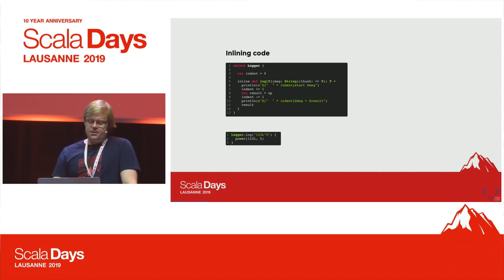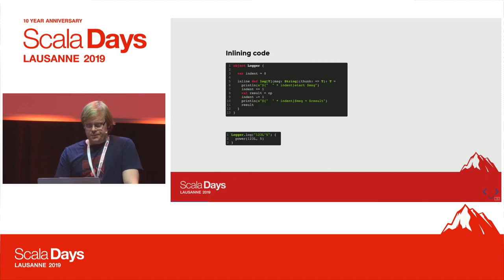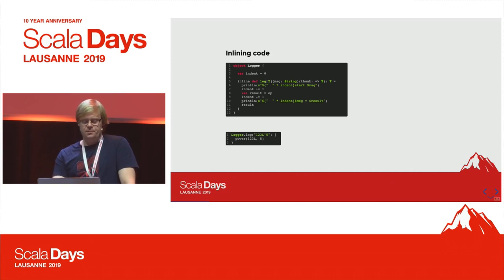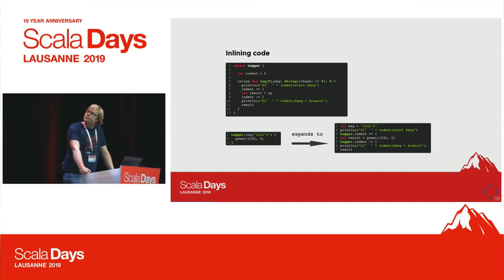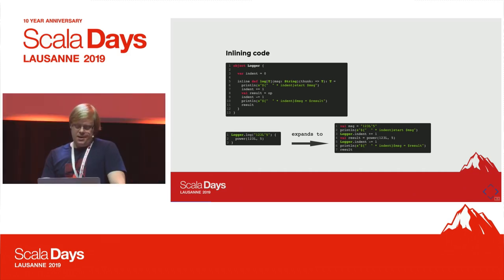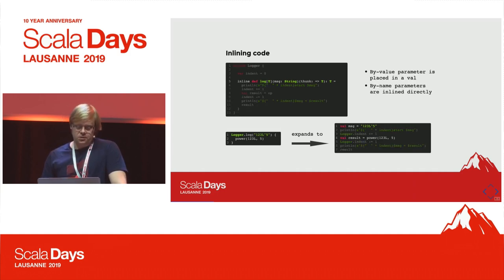The important part here is that the thunk is by-name because we don't want to compute it before we print the message. Below there is a snippet where we use this log operation with a power function, printing a message just before that tells us which power we're computing. When we inline this code, it will look something like this: the message will be put in a val, then we'll have the print line just like before with the ident prefixed because we're not directly inside the object anymore. Then we'll have the computation of the power and print the result.